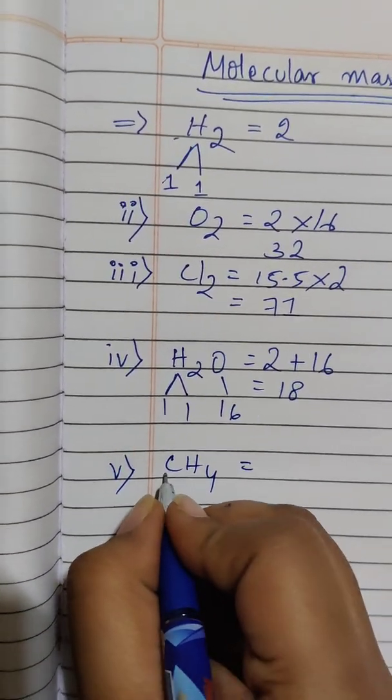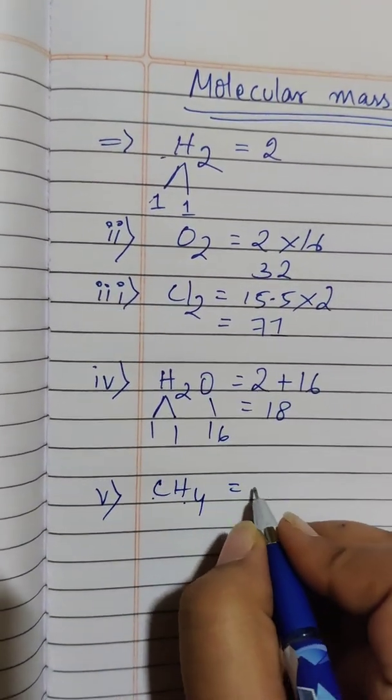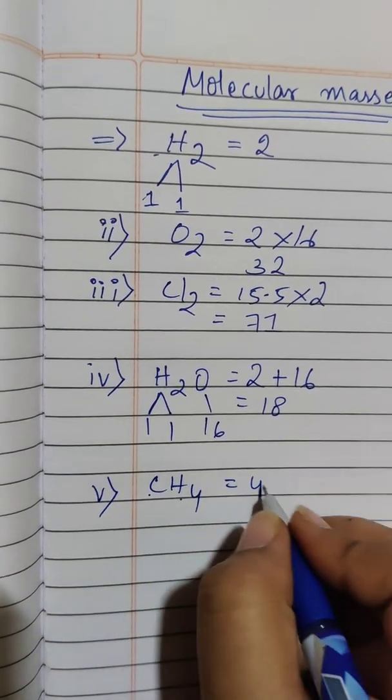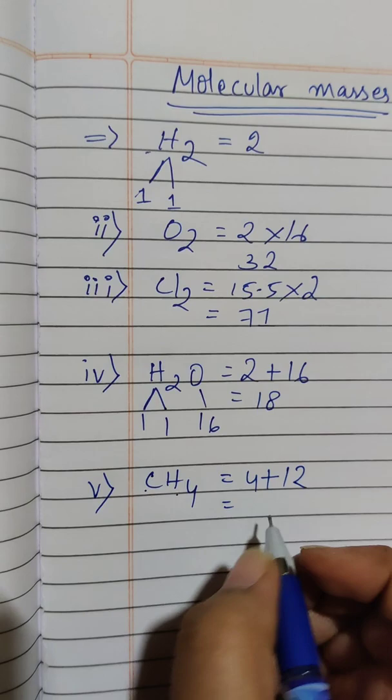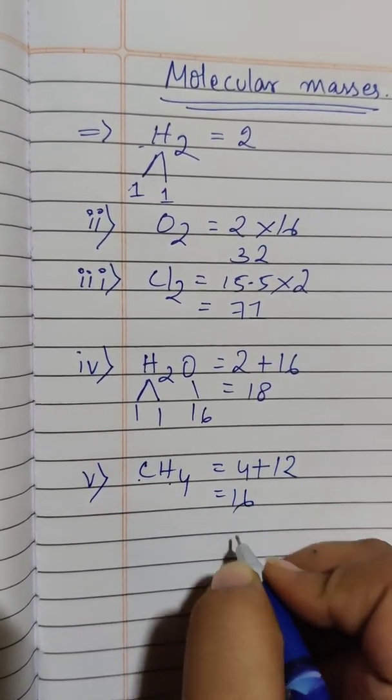CH4. Carbon and hydrogen. Four atoms of hydrogen and one carbon. Carbon twelve. Sixteen.